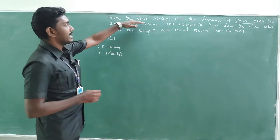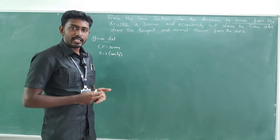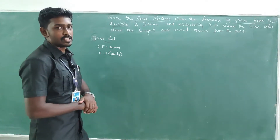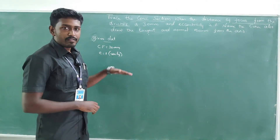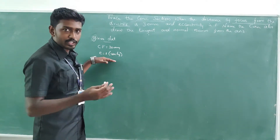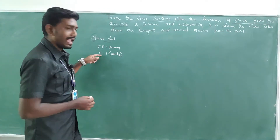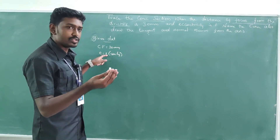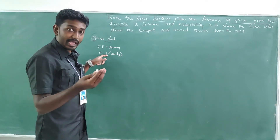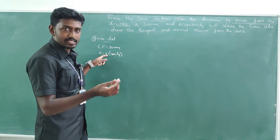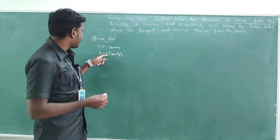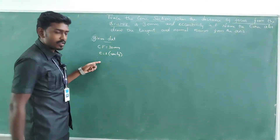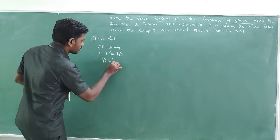There is no direct instruction saying draw the parabola, hyperbola, or ellipse. So first we try to identify the curve using the eccentricity value. If eccentricity is greater than 1 it's a hyperbola, if less than 1 it's an ellipse, and if equal to 1 or unity it's a parabola. So the given curve here is a parabola.